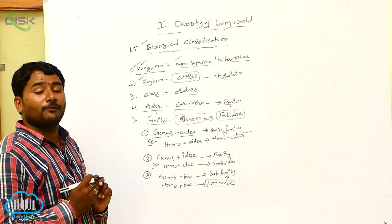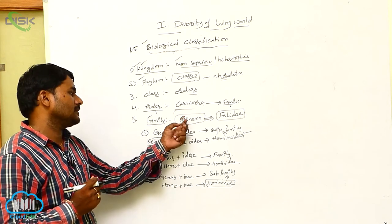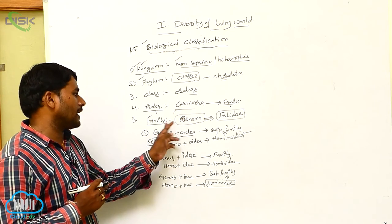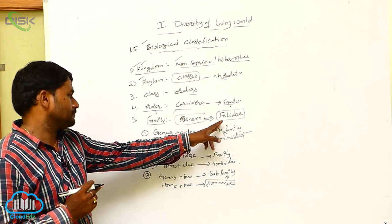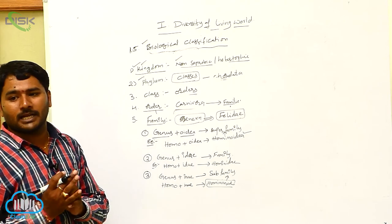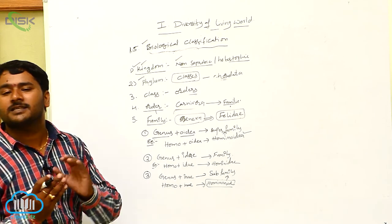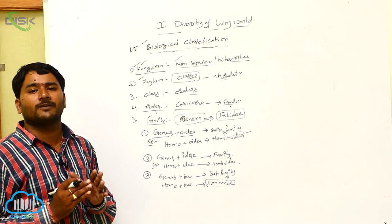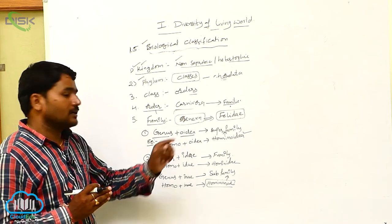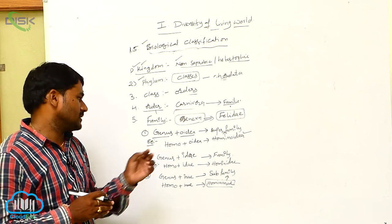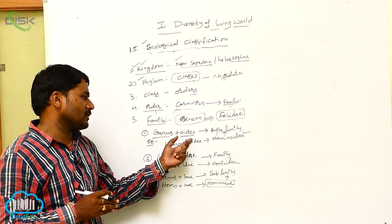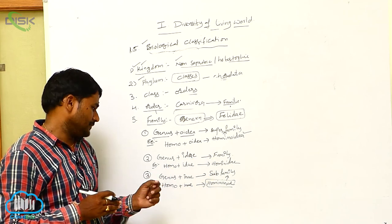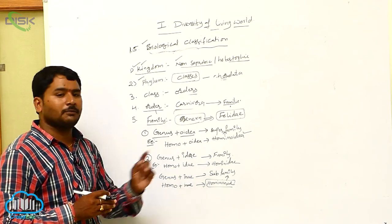So family is a group of one or more closely related genera. If you take the Felidae family, there are two types of genera — Panthera and Felis. To summarize the naming: genus plus '-oidea' gives super-family; genus plus '-idae' gives family; genus plus '-inae' gives sub-family.